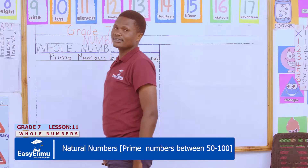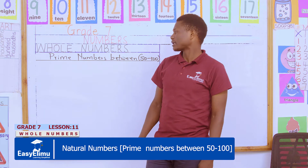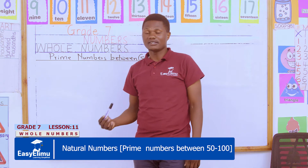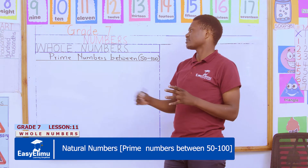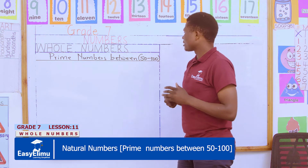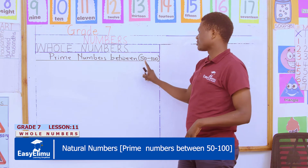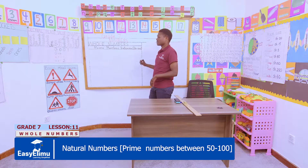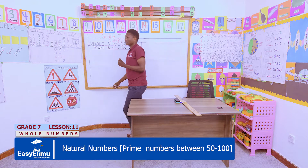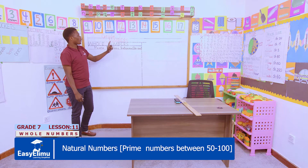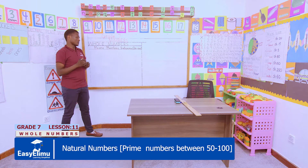Good morning boys and girls, I'm Teacher Regan here once again, welcome to EasyLimu where learning is simplified. In our previous sessions we had introduced the topic of prime numbers, and I gave you some work to identify the prime numbers between the interval 50 to 100. I've decided to discuss this further because I've realized most of us normally confuse some of the odd numbers in that interval with prime numbers.